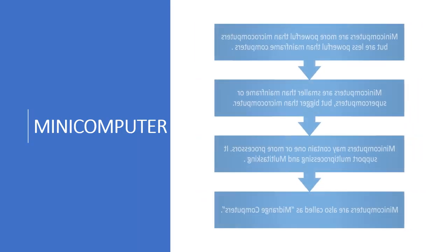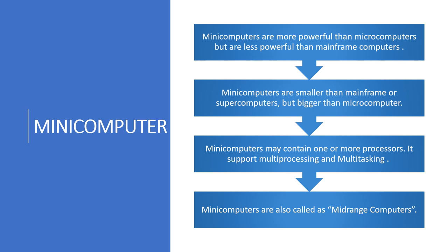Mini computers are more powerful than micro computers but less powerful than mainframe computers. They are smaller than mainframe or super computers but bigger than micro computers. Mini computers may contain one or more processors and support multi-processing and multitasking. They are also called mid-range computers.